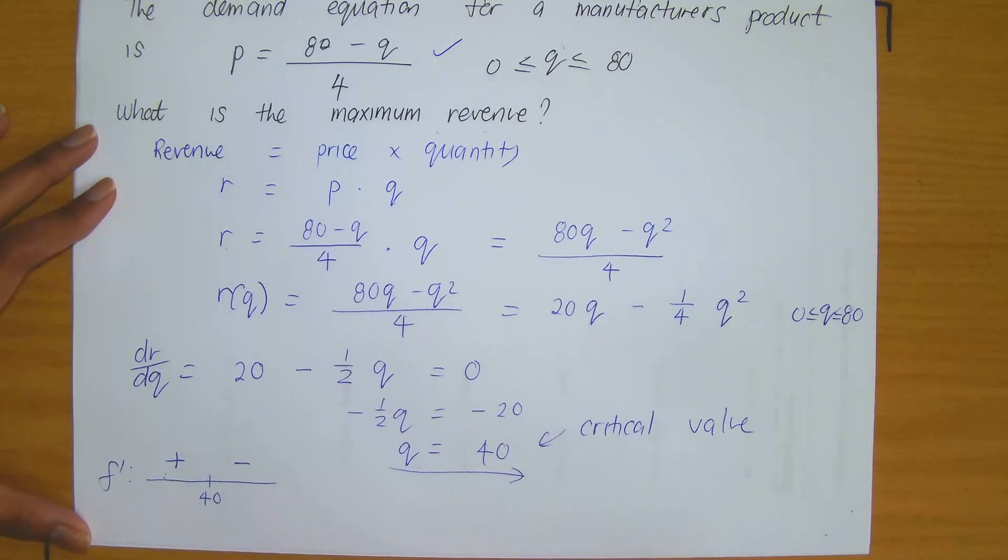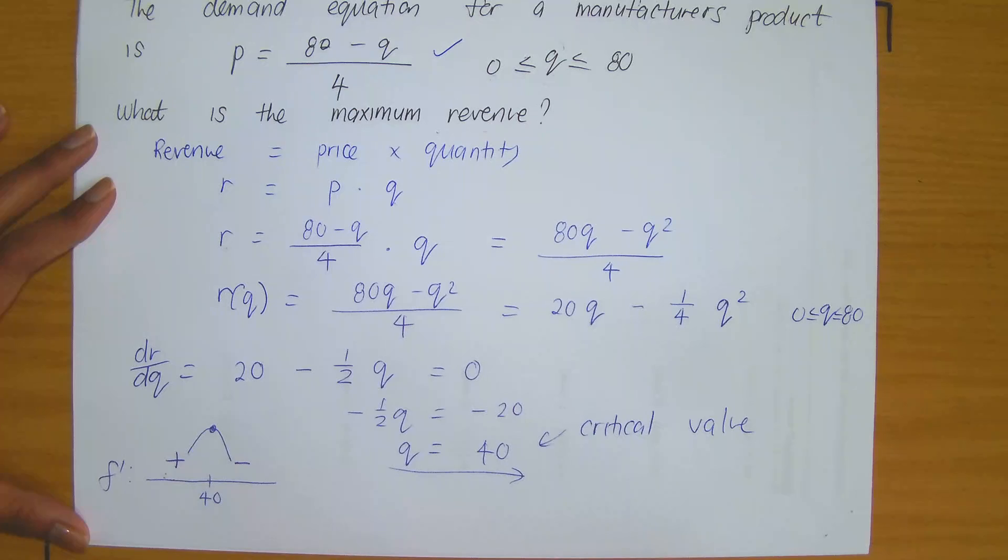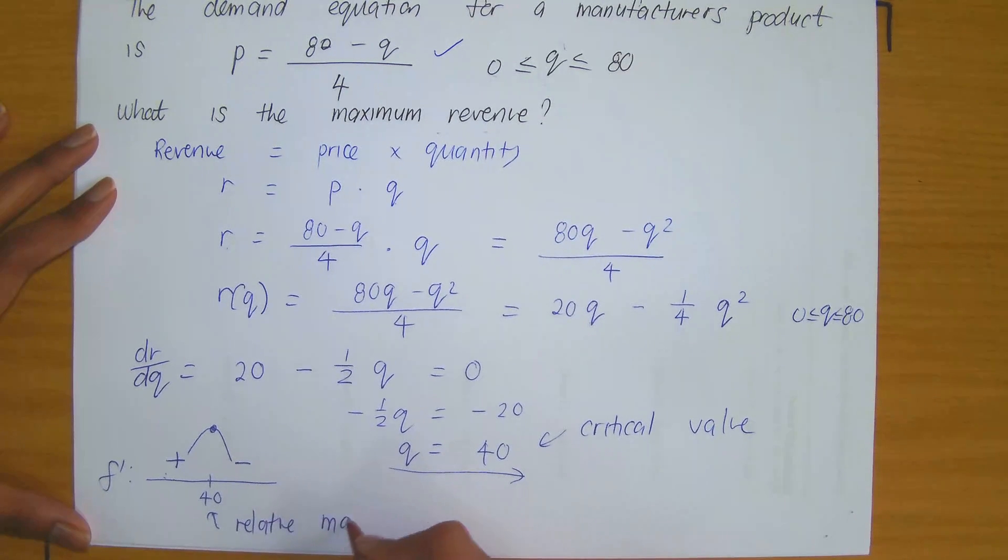But then take a value greater than 40, then observe that you will get a negative answer. For example, if you plugged in Q equals to 50. So what has happened to this graph? There's a rise, and then there's a fall. So that means at Q equals to 40, we have a relative maximum.